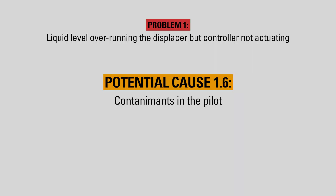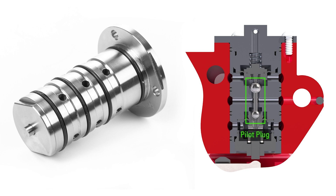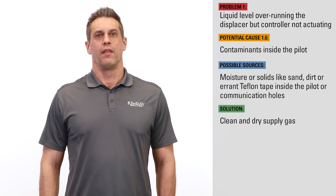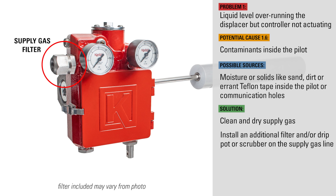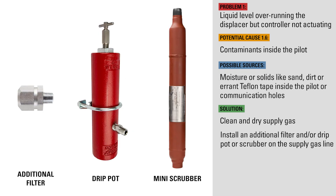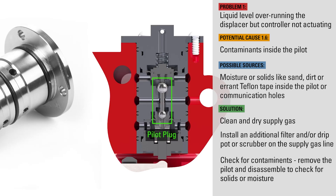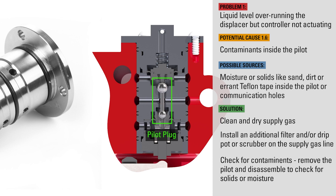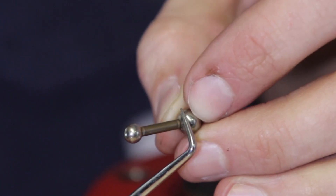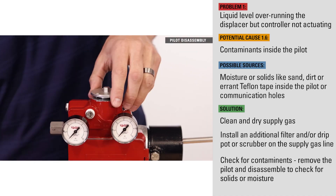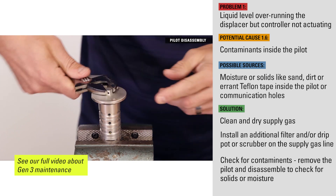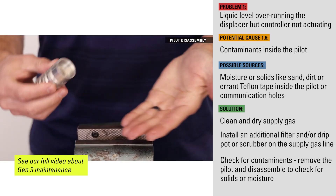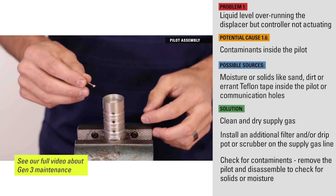Moisture or solids like sand, dirt, or errant Teflon tape inside of the pilot or communication holes inside the casting could prevent the controller from actuating. The supply gas should be clean and dry. The Gen 3 comes with a supply gas filter, but if that's not enough, we recommend installing an additional filter and/or drip pot or scrubber on the supply gas line. The pilot plug inside allows for very precise control and low emissions, but contaminants can prevent the pilot plug from moving or restrict full range of motion. To check for contaminants, remove the pilot from the controller, disassemble, check for any solids or moisture, and clean and dry the components before reassembling.